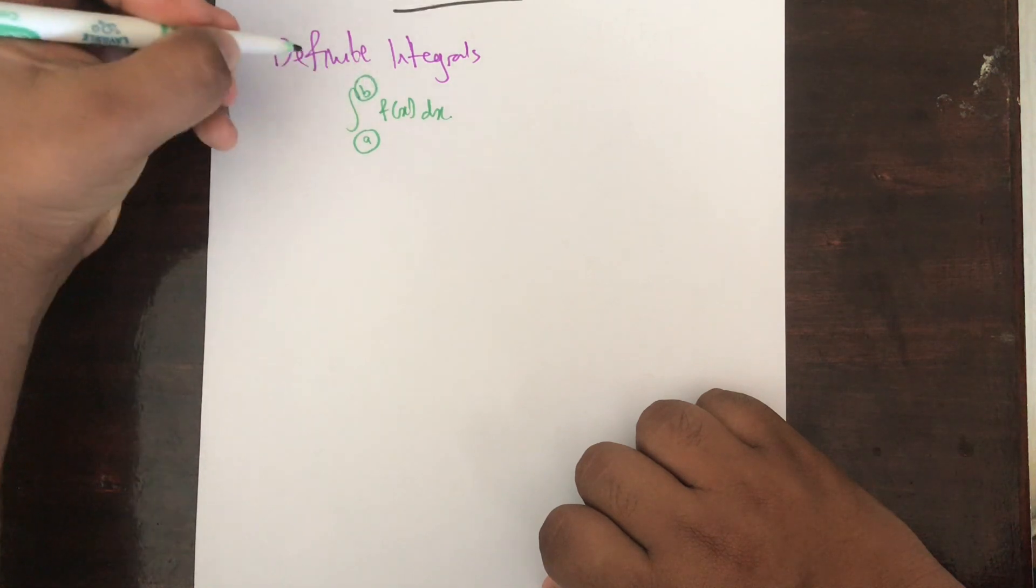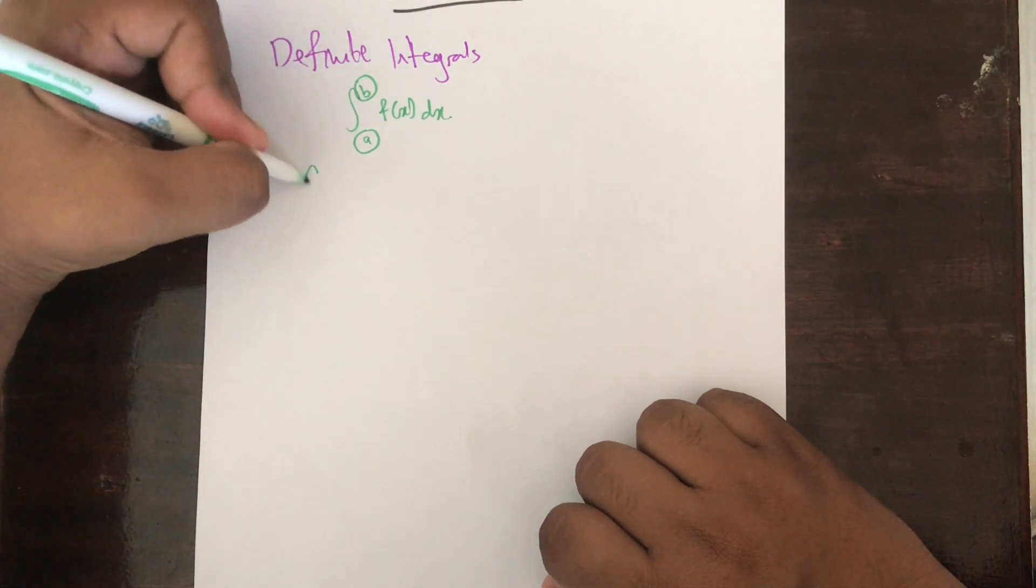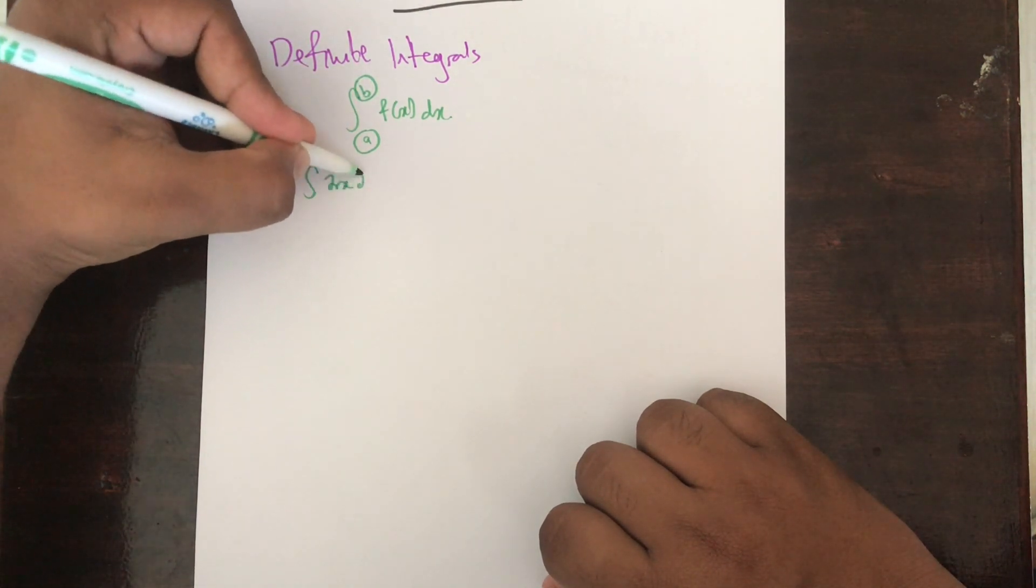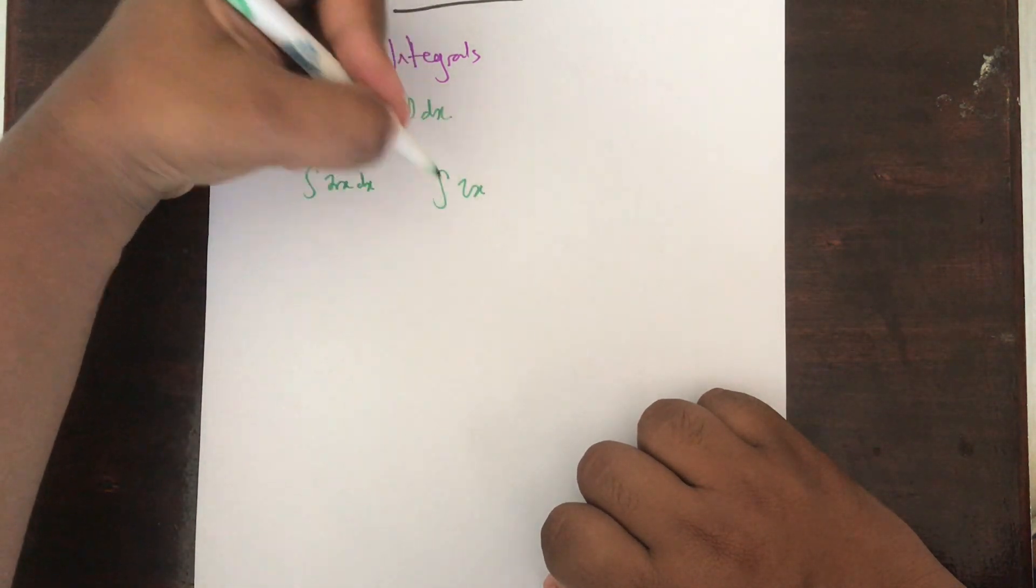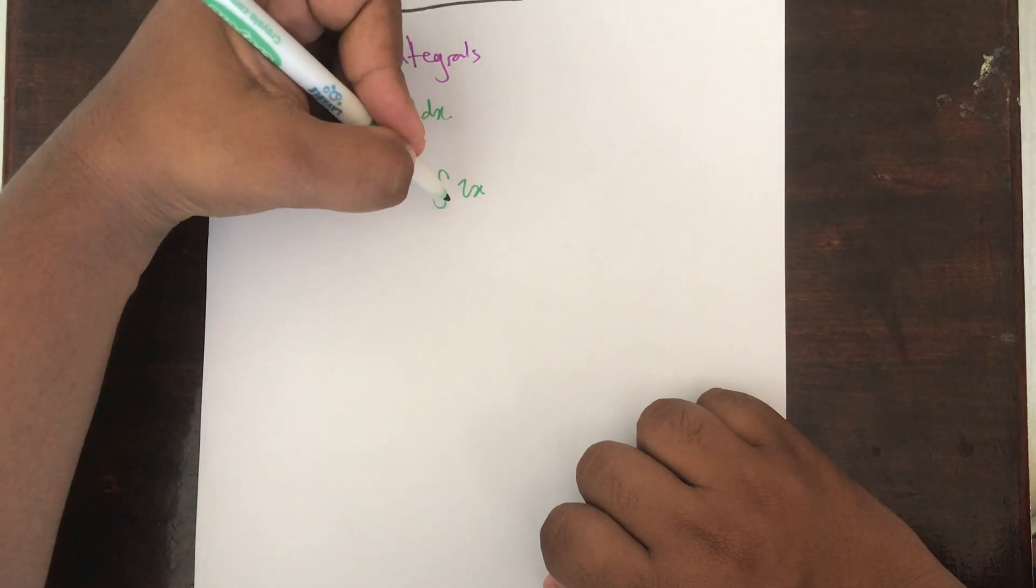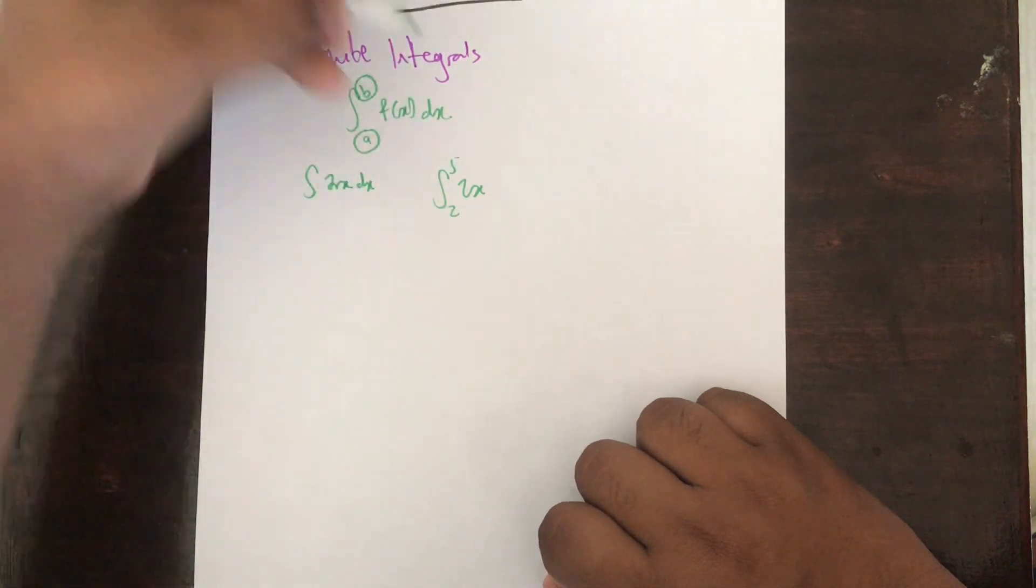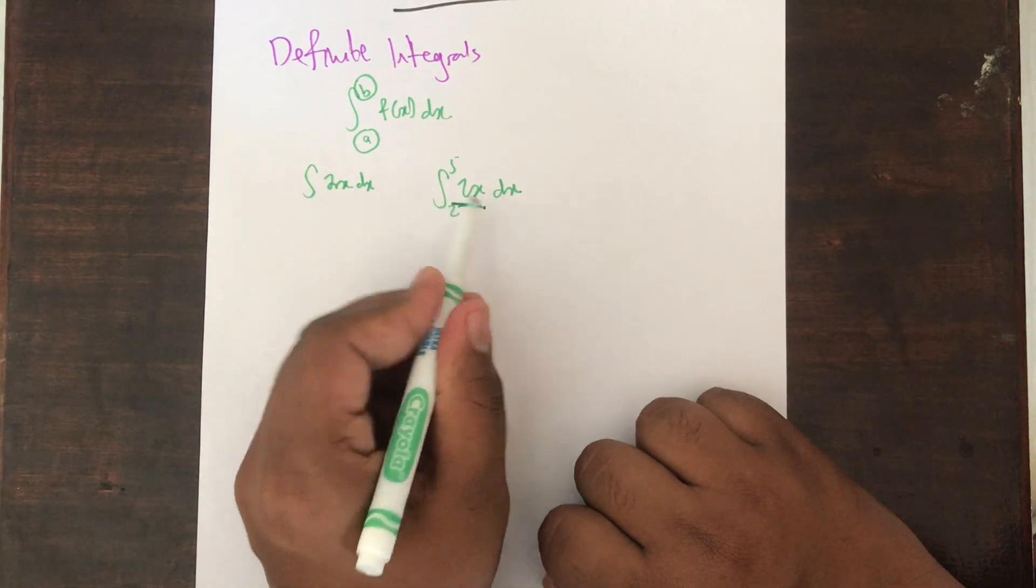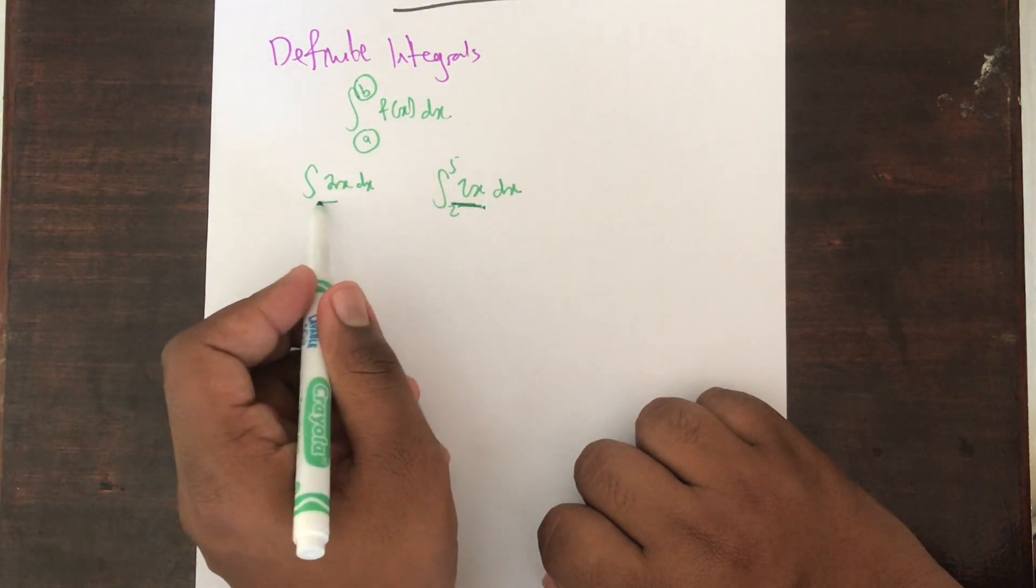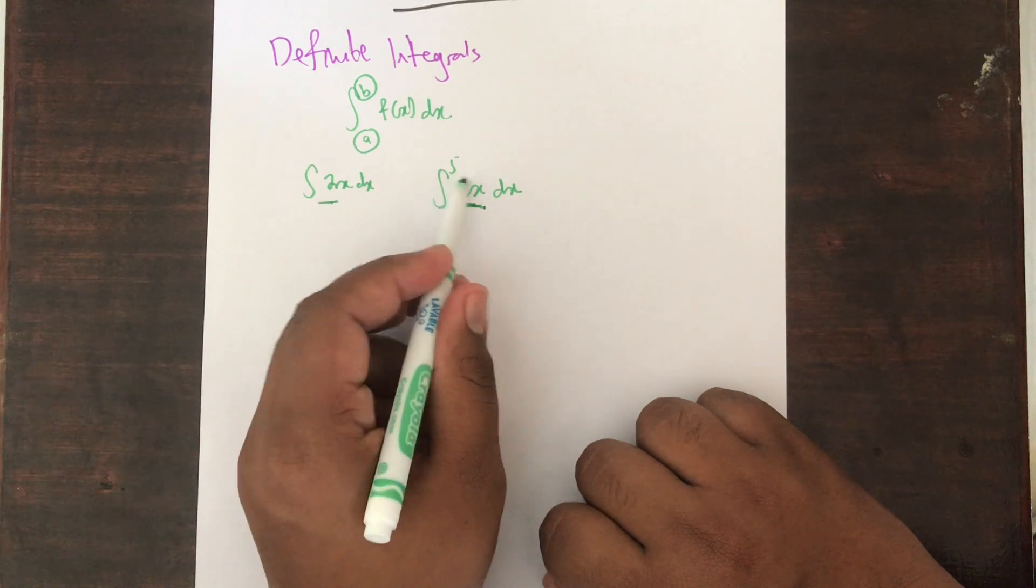Suppose if you have something like integral of 2x dx. This is very similar to the integral of 2x, but you introduce some limits say 2 and 5. What you're gonna do here is you're gonna integrate 2x the normal way on how we learned, but then you substitute the limits.